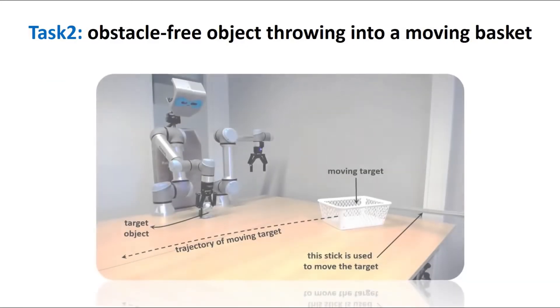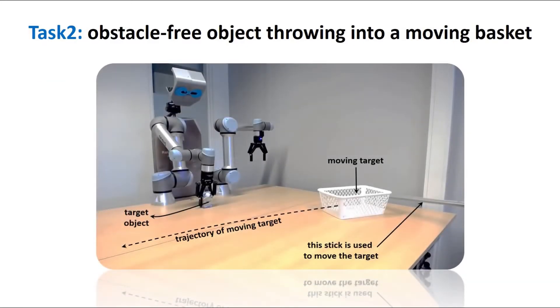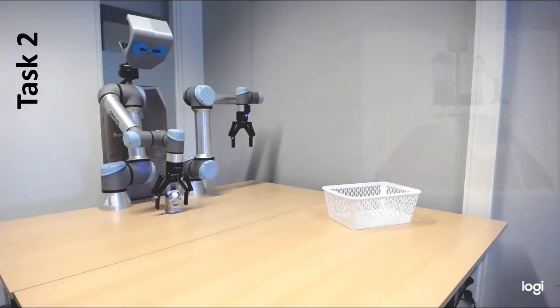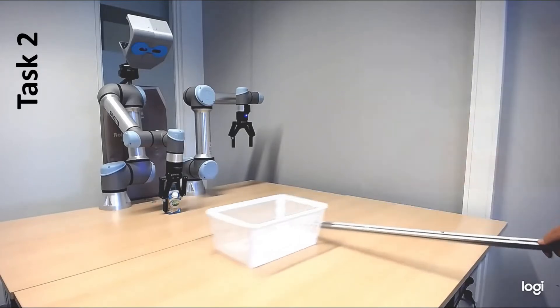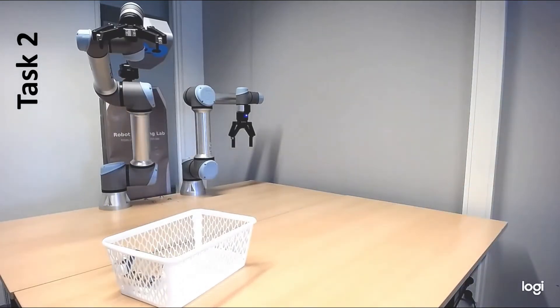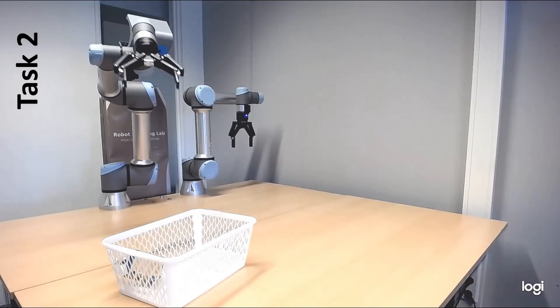In the second round of experiments, Task 2, the robot should learn to throw a target object into a moving basket. In these experiments, the robot needs to detect the pose of the basket and estimate its direction and velocity, and then predict proper parameters to throw the object into the basket successfully.